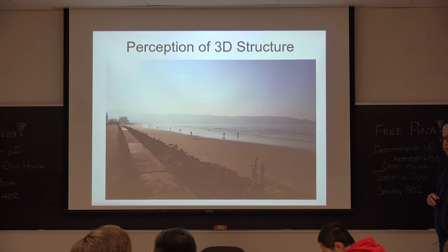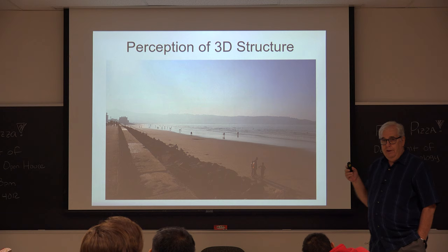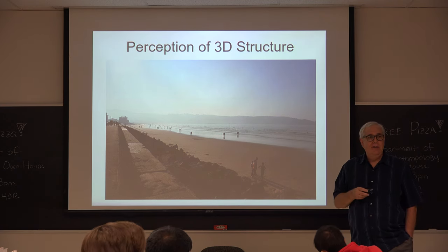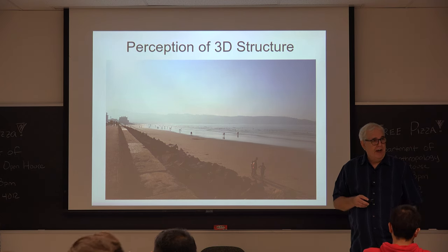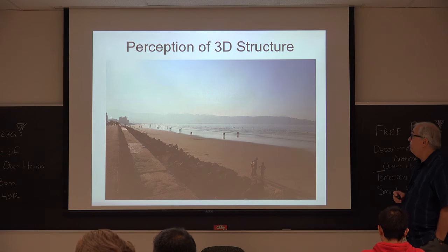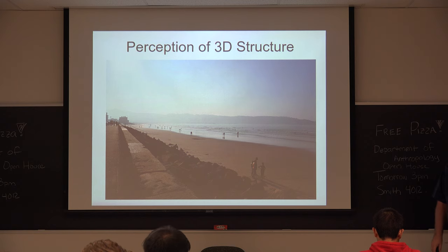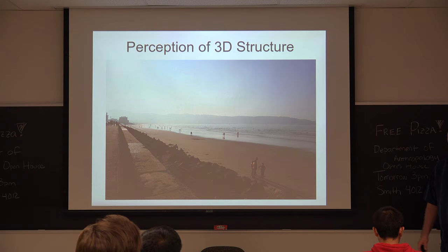Today we're going to start on a path that will lead us through the next couple of sessions — actually mostly the remainder of the course. We're going to talk about sources of information by which we come to know about the world. If you look at an image like this and you see it's on a beach, with people there, some off in the distance and some closer — the question we're going to deal with for the rest of the term is: how can we know that?